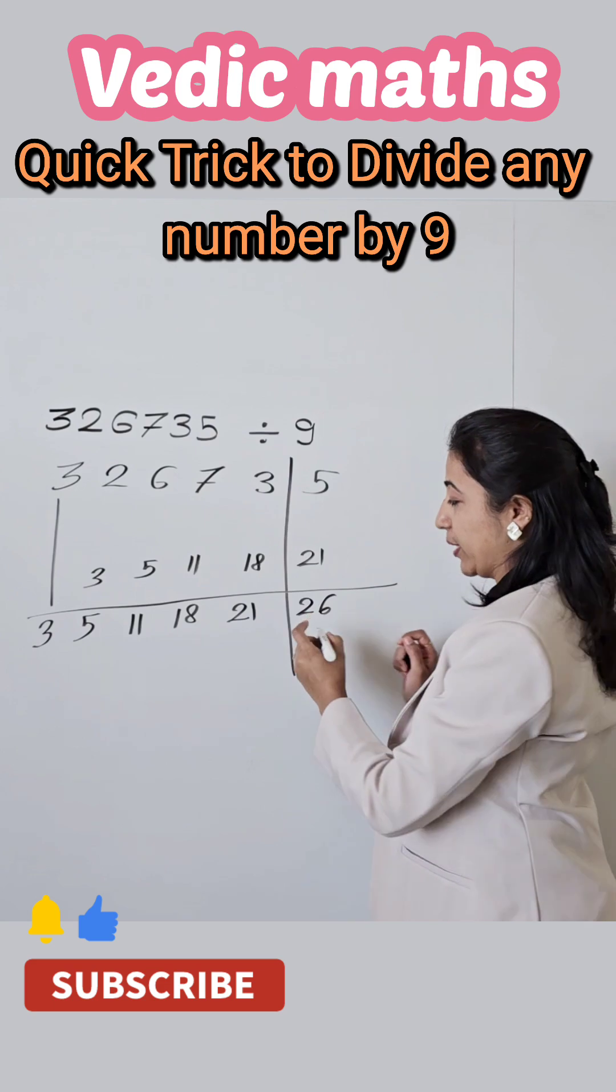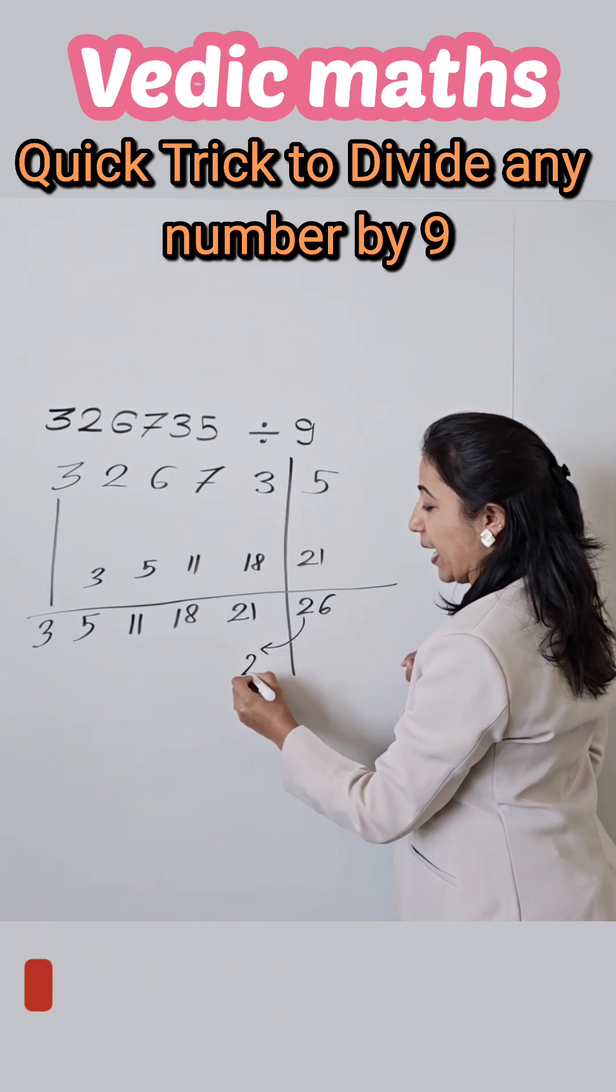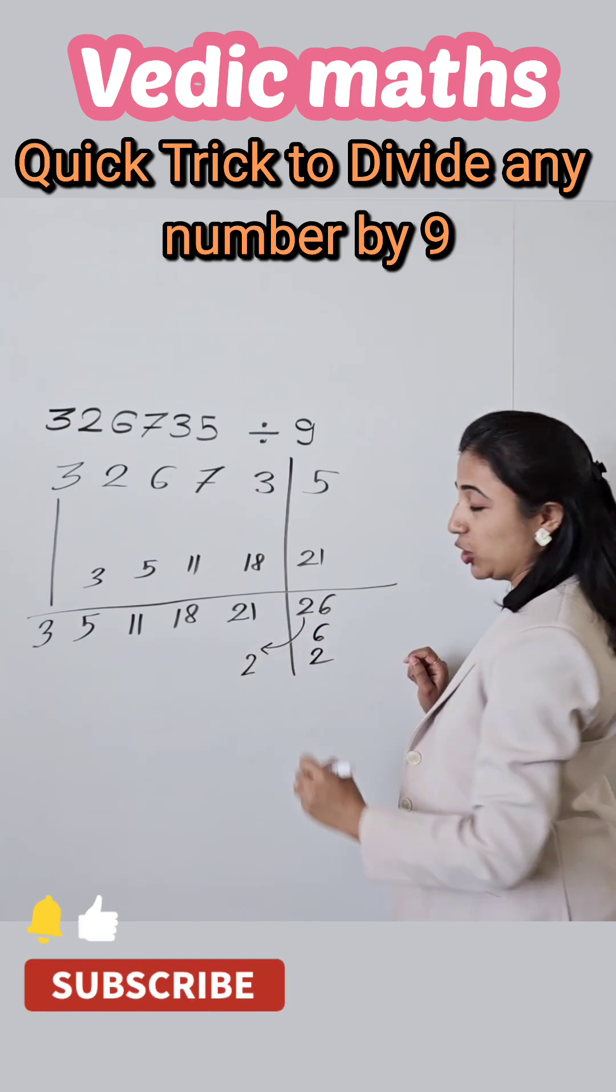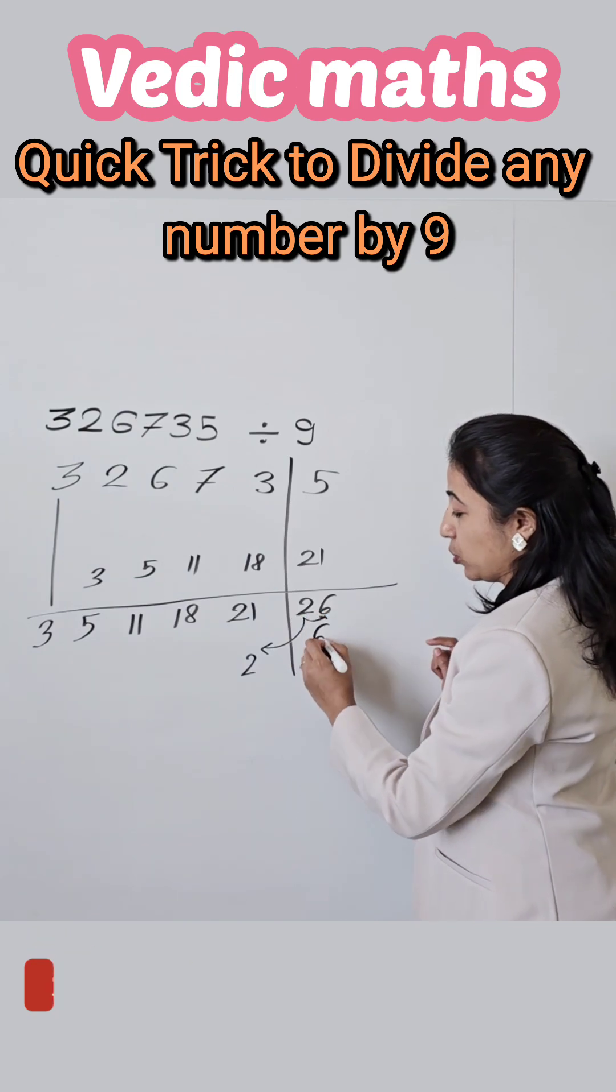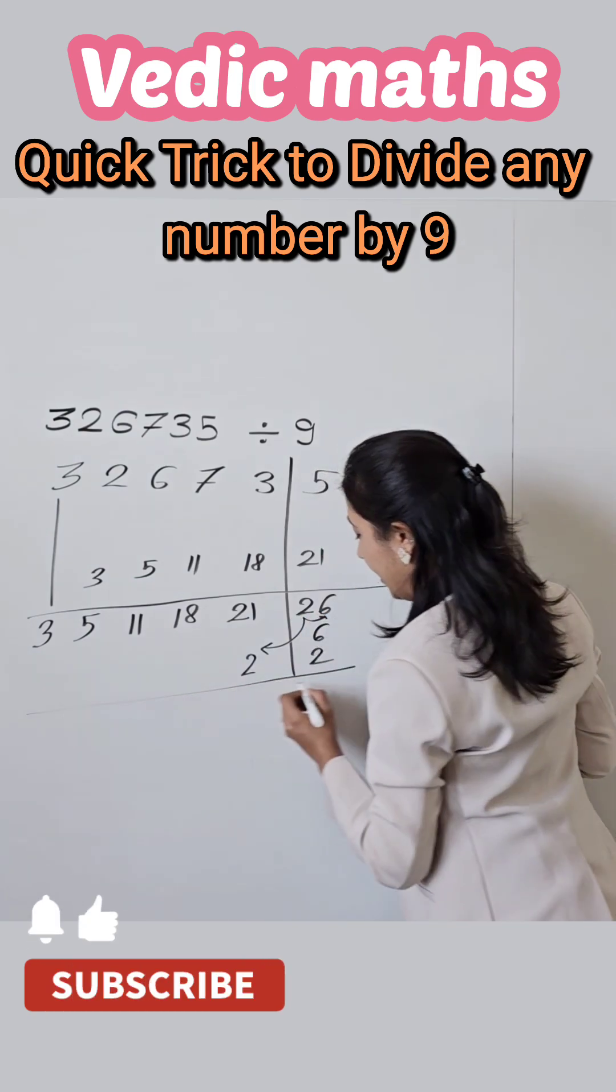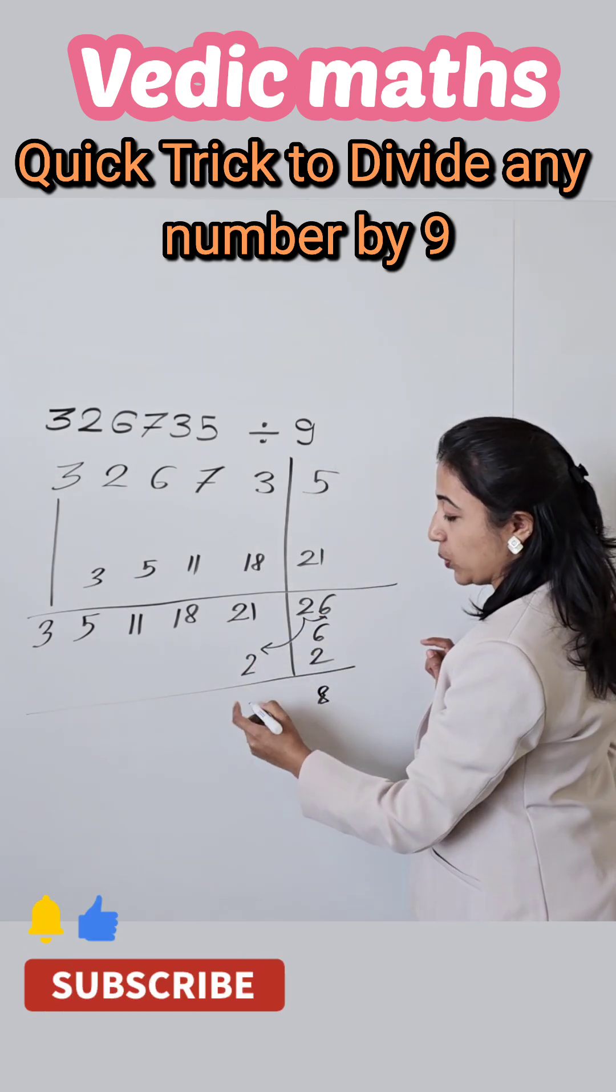Again 26 we have to break into two parts. Here 2 you have to add in this number as well as in the quotient part, means also in the 6. So here 6 plus 2 is 8 and here 21 plus 2 is 23.